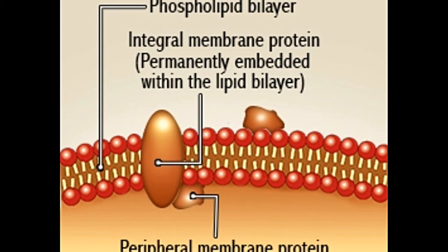In 1972, two scientists named S.J. Singer and G.L. Nicholson came up with the theory of the fluid mosaic model. Freeze fracture technique and electron micrographs were used for observing the cell membrane and its structure.